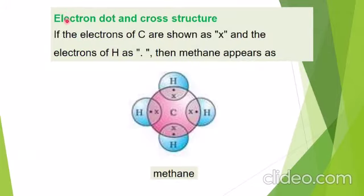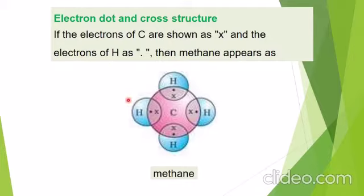In the electron dot-and-cross structure of methane, the electrons of carbon are shown by a cross and the electrons of hydrogen are shown with a dot. In this way we can represent the methane molecule.